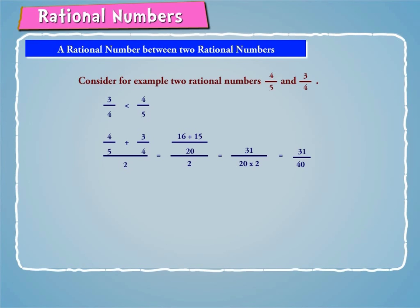In fact, there is no end to finding rational numbers between 4 by 5 and 3 by 4.